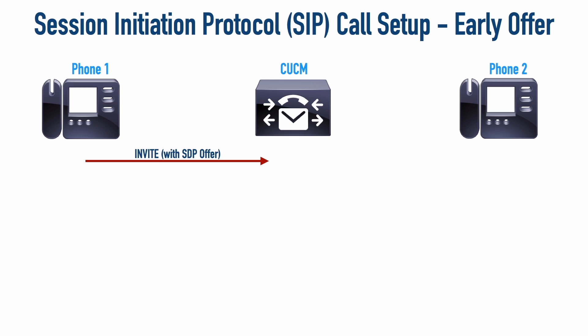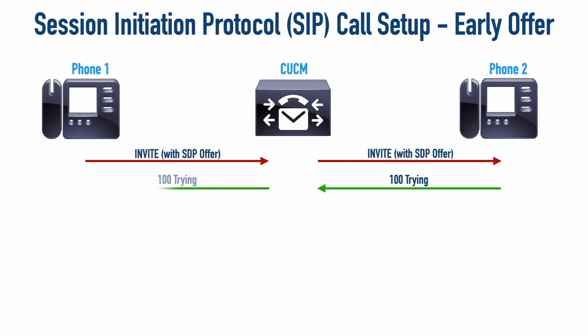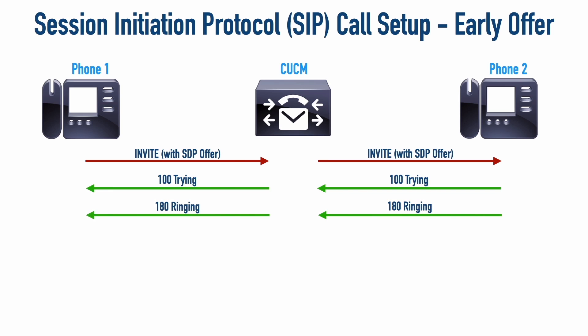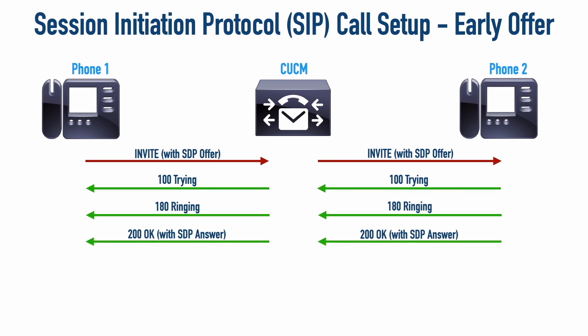We say this is early offer because the SDP offer is very early in the call setup — inside the very first message. We're saying: here's an INVITE, and here are the parameters I'm proposing for this call. That's forwarded via the Communications Manager to phone two. One of those provisional messages comes back — a 100 Trying response — and then the phone starts ringing, sending a 180 Ringing response. Phone two can now select a codec from the SDP offer, knows what port numbers will be used for the RTP stream, and sends back a 200 OK — including phone two's SDP answer, agreeing on, say, the G.729 codec and the proposed ports.